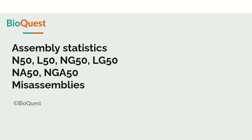Hello friends. In this video we will explore different assembly statistics such as N50, L50, NG50, LG50, NA50, NGA50, and the concept of misassemblies. These are very important parameters by which we can compare different assemblies and get a lot of information about assembly quality.